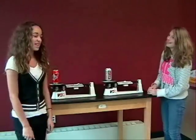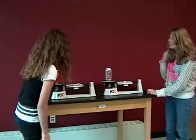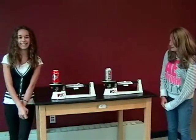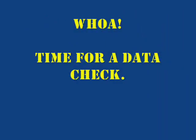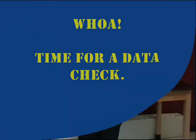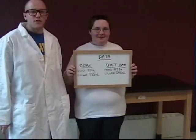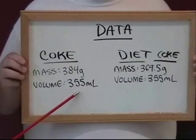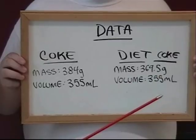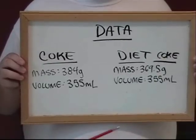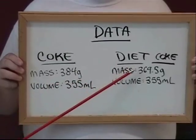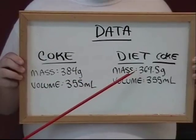The Diet Coke has a mass of 369.5 grams. Let's examine the data that we've collected so far. We know that both of our objects have the same volume, 355 milliliters. We've just discovered that they have a different mass. The mass of the Coke was 384 grams, while the Diet Coke had less mass, only 369.5 grams.